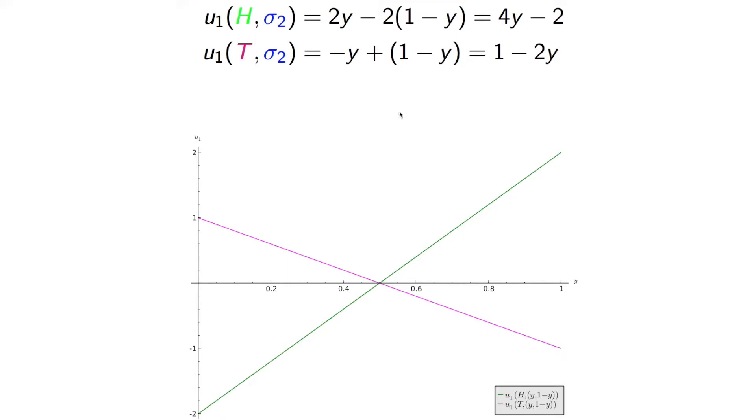Now if we plot these, we see in this magenta, reddish-pinkish color, the utility to player 1 when he or she plays tails, and here in green, the utility to player 1 when he or she plays heads against the probability y. And now what we can do is we can see, if y is less than a half,